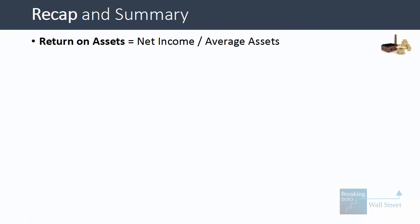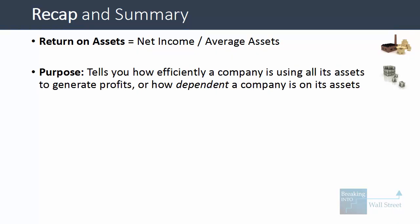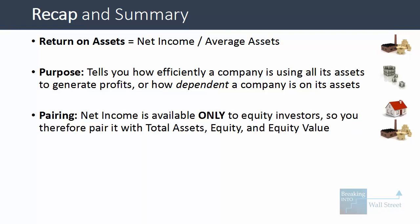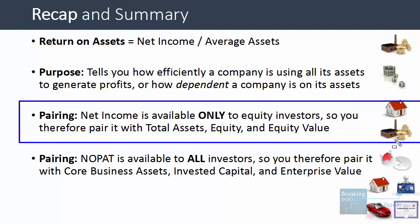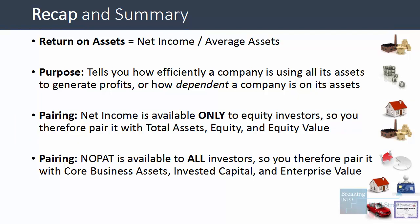Quick recap: Return on assets is net income divided by average assets over a period — it tells you how efficiently a company uses all its assets to generate profits. Net income is only available to equity investors, so you pair it with total assets, common equity on the balance sheet, and equity value. NOPAT is available to all investors, so you pair it with core business assets, invested capital, and enterprise value. Hopefully this clarifies how you calculate returns-based metrics and decide what to pair them with on the balance sheet.